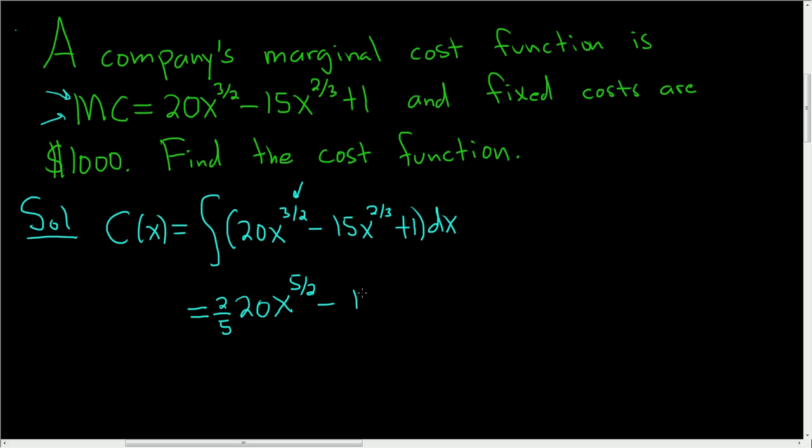Likewise here, the 15 hangs out. And we have x. Now we're adding 1. So 2 thirds plus 3 thirds is 5 thirds. Then we're dividing by 5 thirds, but that's the same as multiplying by 3 fifths. And then the antiderivative of 1 is just x. And then we still have our constant c.